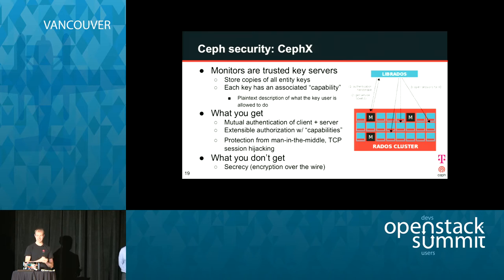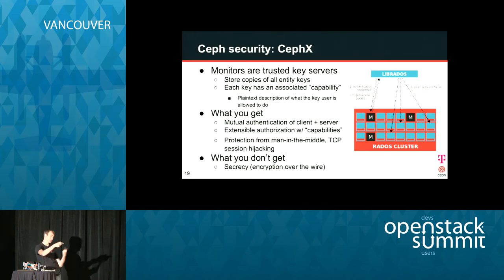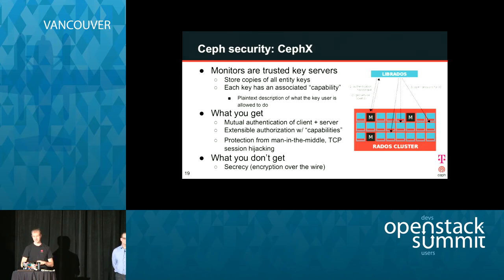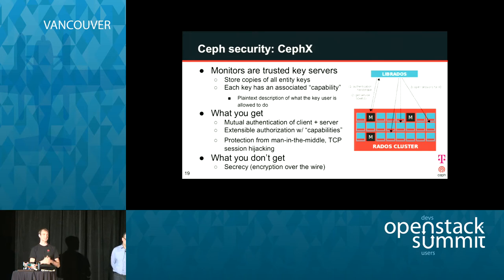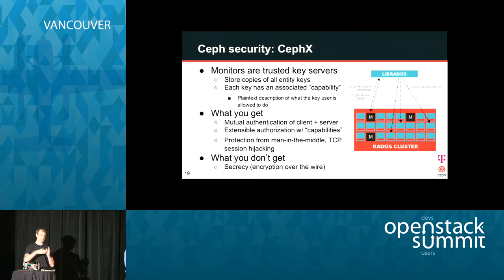Overall, what Ceph provides is mutual authentication of client and server. The client knows the server has a copy of its secret key, and the server knows the client has its stored key, so you can avoid man-in-the-middle attacks. It gives you an extensible framework with capabilities to describe different types of services and ways to restrict access. What you don't get from CephX is secrecy — the authentication protocol prevents recovery of encryption keys by a sniffer, but the actual data reads and writes are sent in plain text.